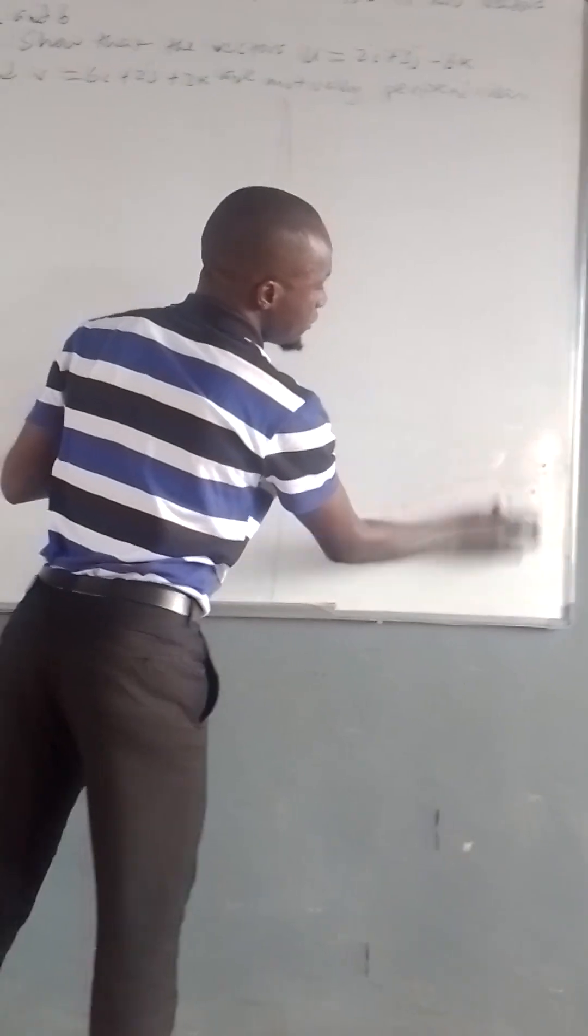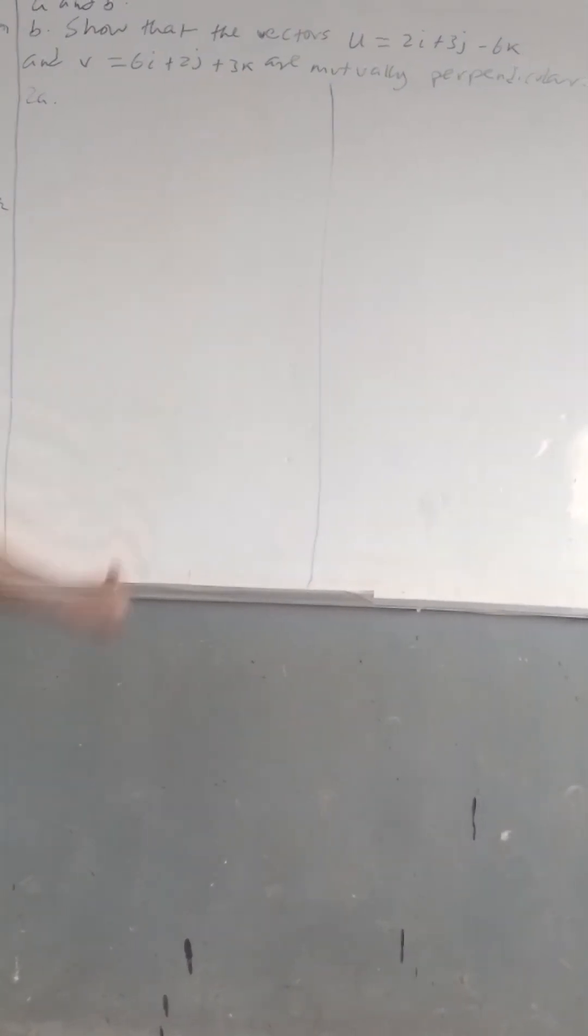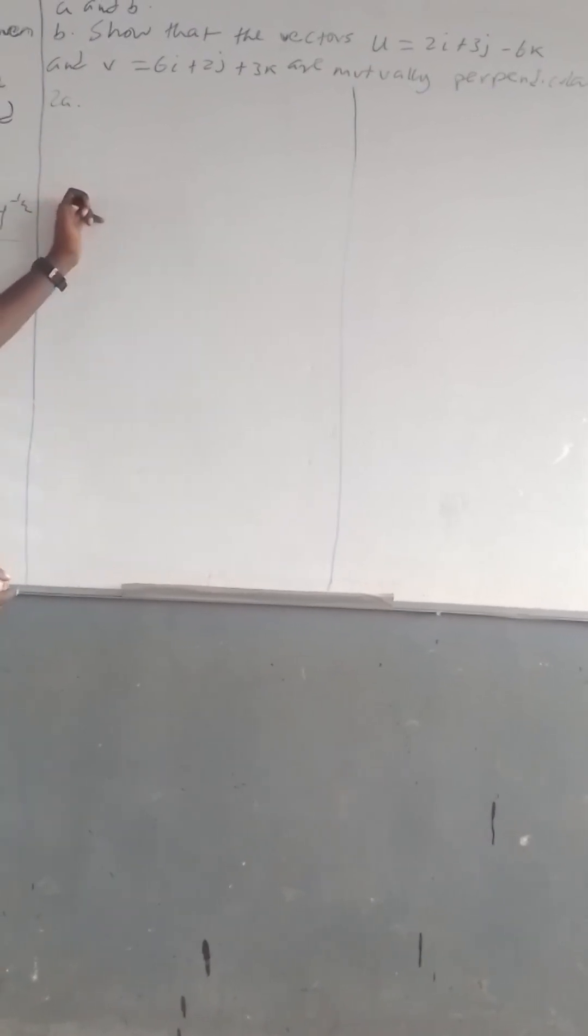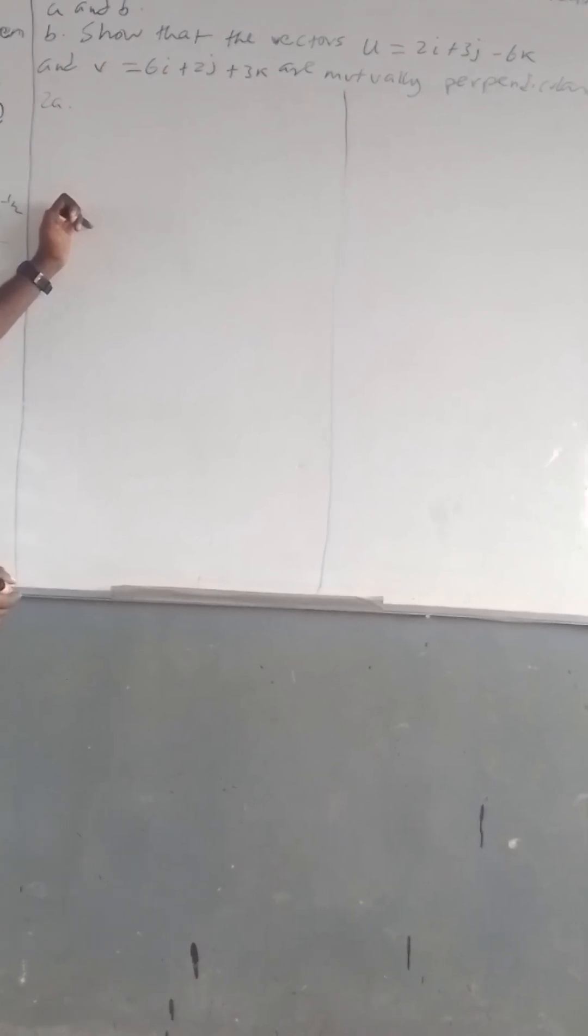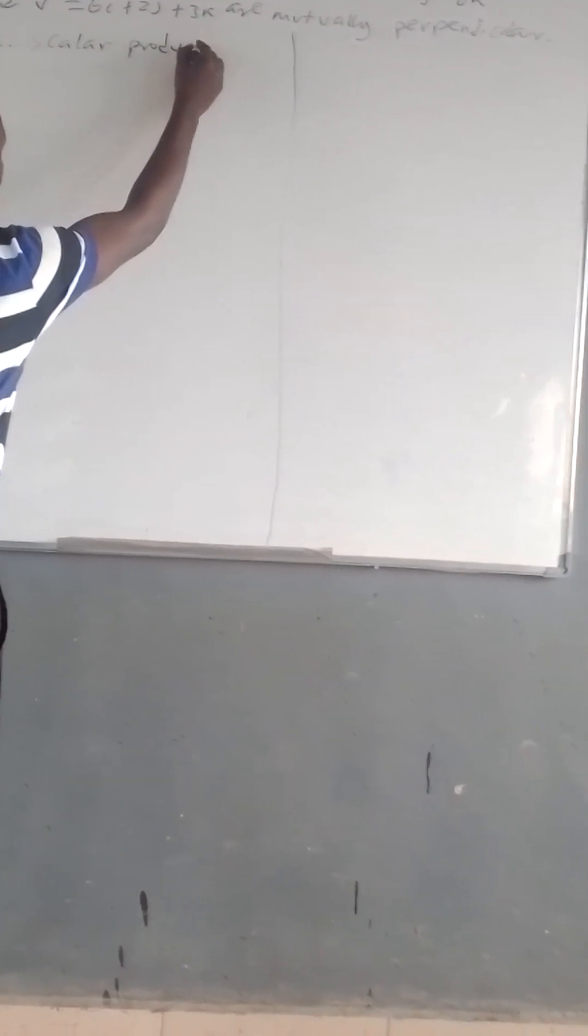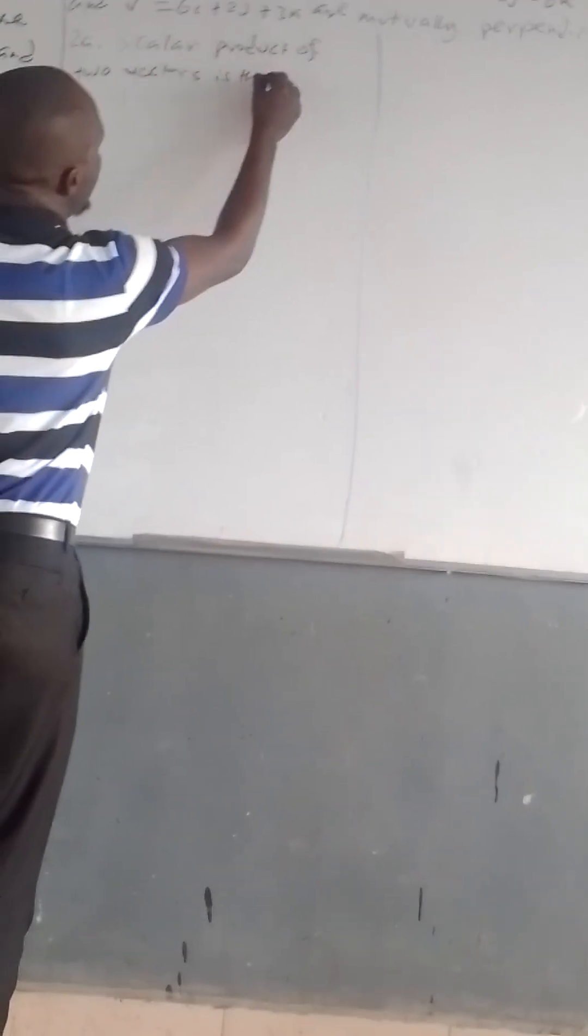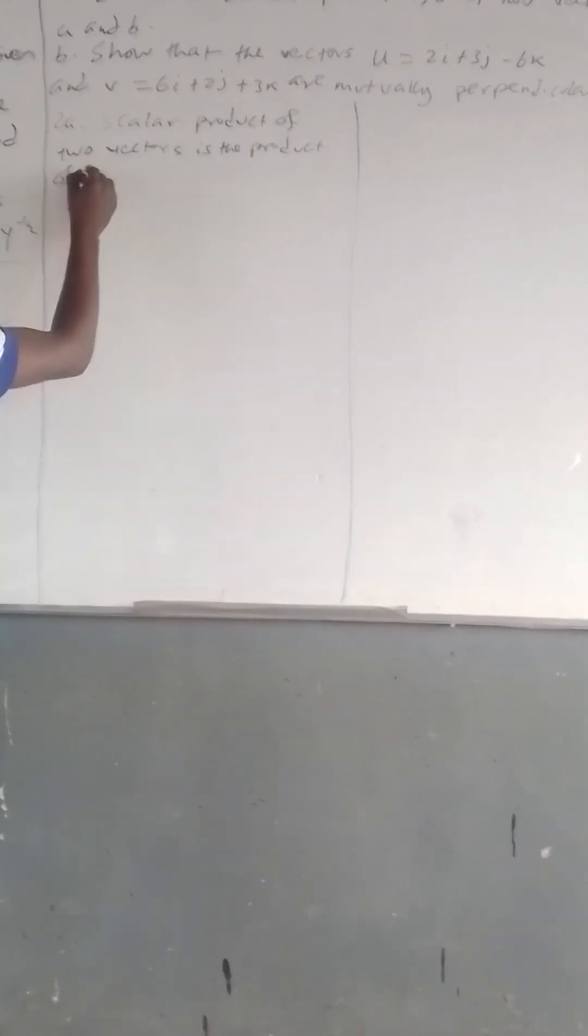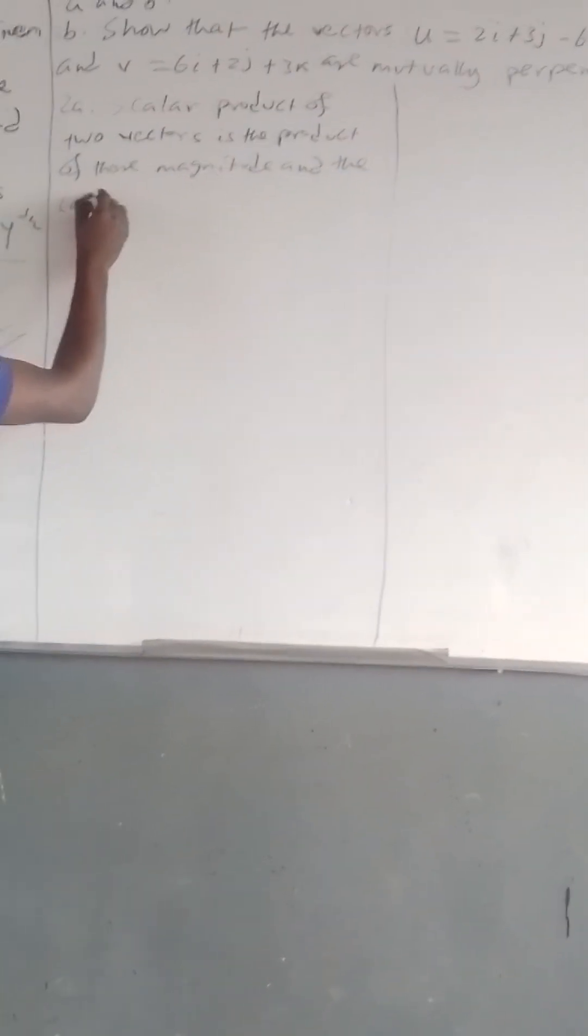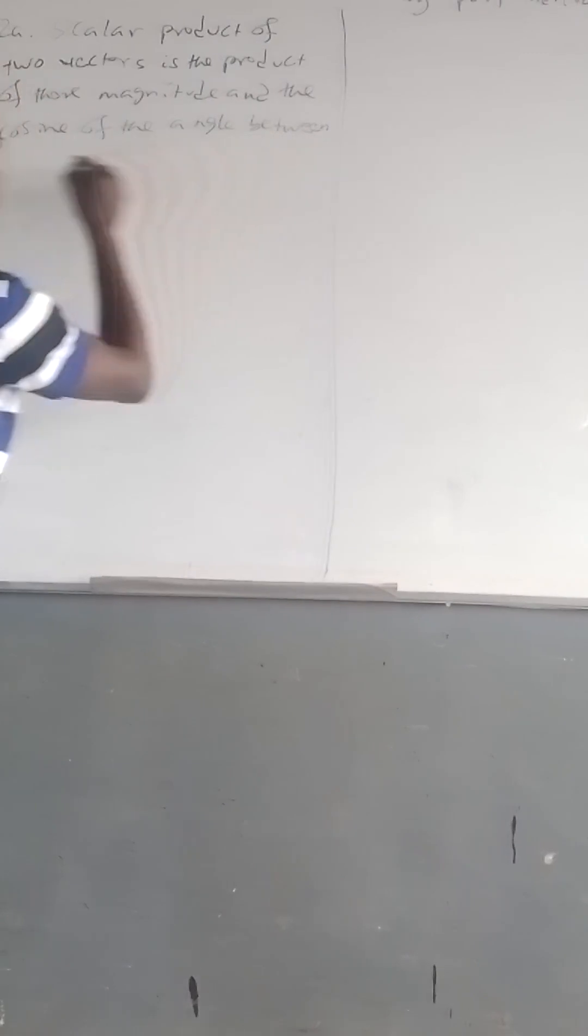The first thing to do here is to define the scalar product. The scalar product of two vectors is equal to the product of their magnitudes times the cosine of the angle between them.